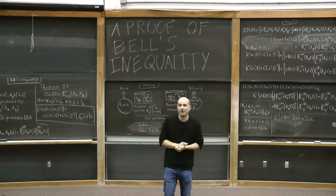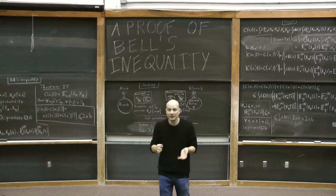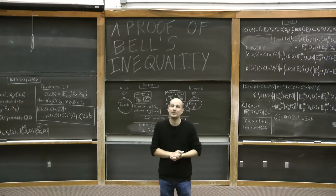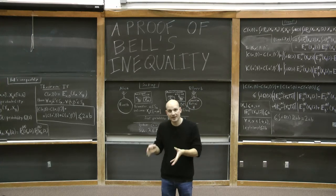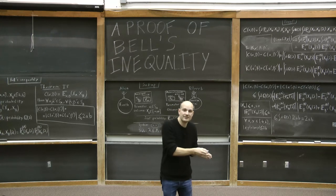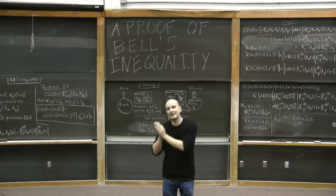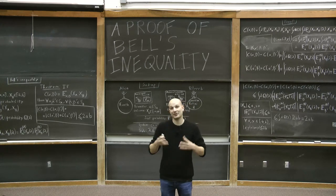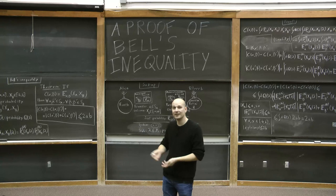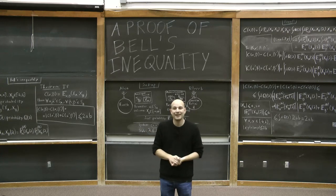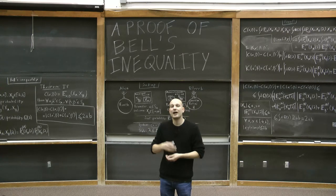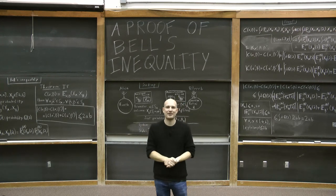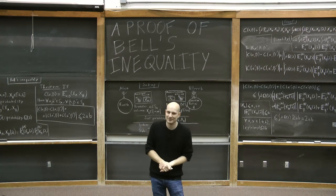Today we discussed a proof of Bell's inequality starting only from the assumption of locality, clearly establishing the connection between a violation of Bell's inequality and non-locality. Thank you all for watching. In my next video, in a couple of months or so, I'll be talking about time reversibility and the concept of entropy, and I hope to see you there.